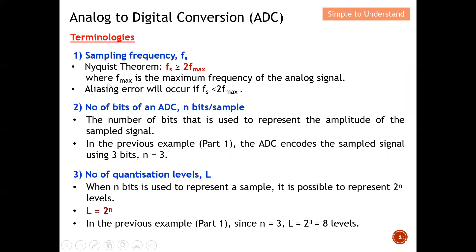On the next video, I'm going to explain what that interesting error is. Number 2, number of bits of an ADC. Basically they are described in terms of m bits per sample. On my previous video Part 1, I mentioned why this is essential — it represents the resolution of my analog signal, specifically the number of bits used to represent the amplitude of the sampled signal.